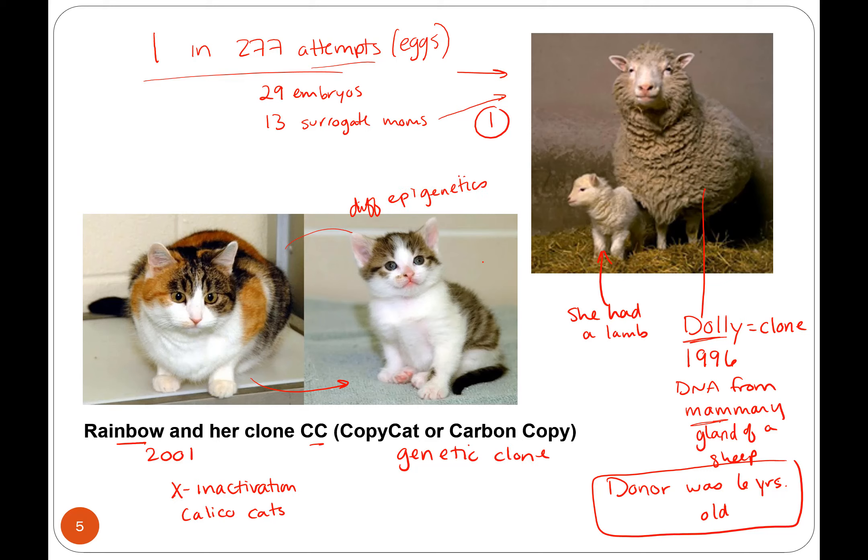They have different epigenetics. I like to use this example because people have to realize that if they're cloning their pet, you're not going to get the exact same pet. We know the idea of nature versus nurture — the environment that you grew up in affects your personality. It can affect your epigenetics, which can affect your health, your gene expression, all of that kind of stuff.